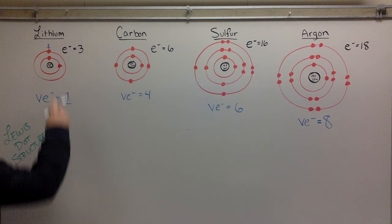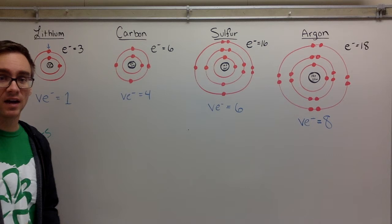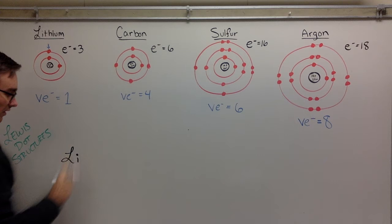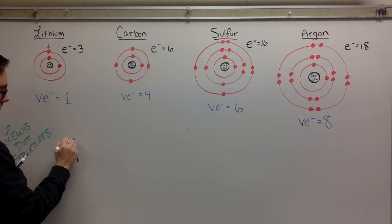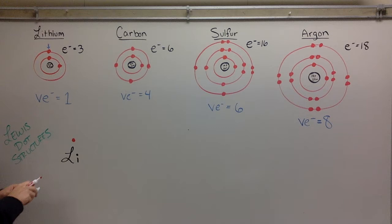Lithium has one valence electron. Instead of drawing it every time with all the energy levels, I'm just going to use the symbol Li - that's for lithium - and it has one valence electron. That's the Lewis dot structure.